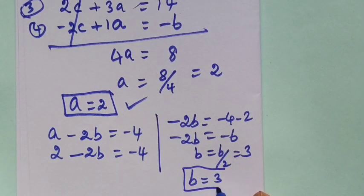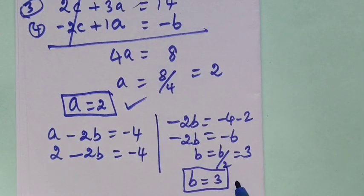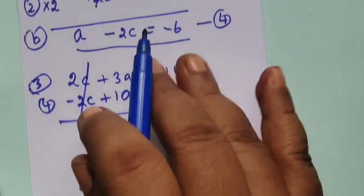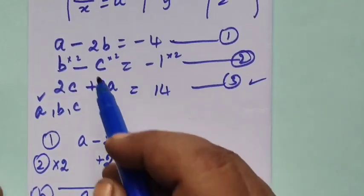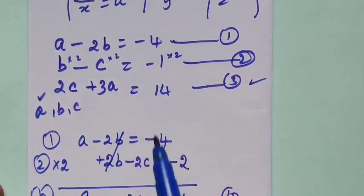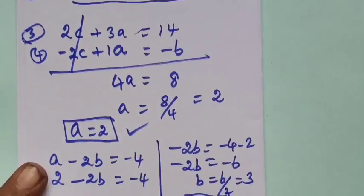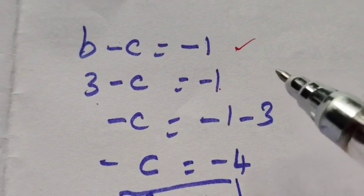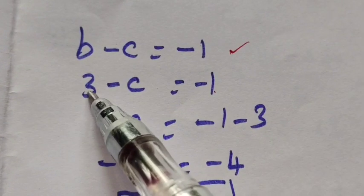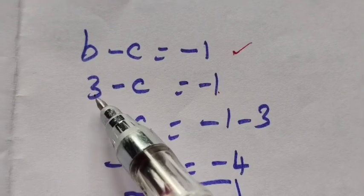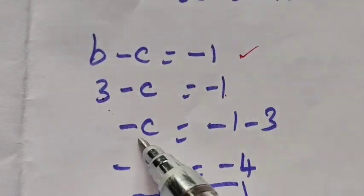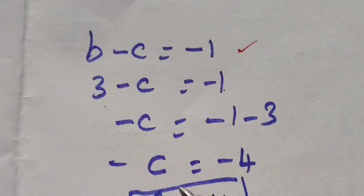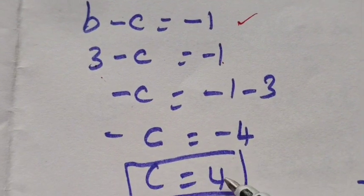Now we have found b value. We know a value and b value, substitute in equation: b minus c equal to minus 1. The b value is 3, so 3 minus c equal to minus 1. Minus 3 so c equal to 4.